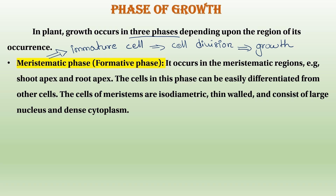It occurs in the meristematic region — the shoot apex and root apex. The cells in this phase can be easily differentiated from other cells. The cells of meristem are isodiametric, thin-walled, and consist of large nuclei and dense cytoplasm.